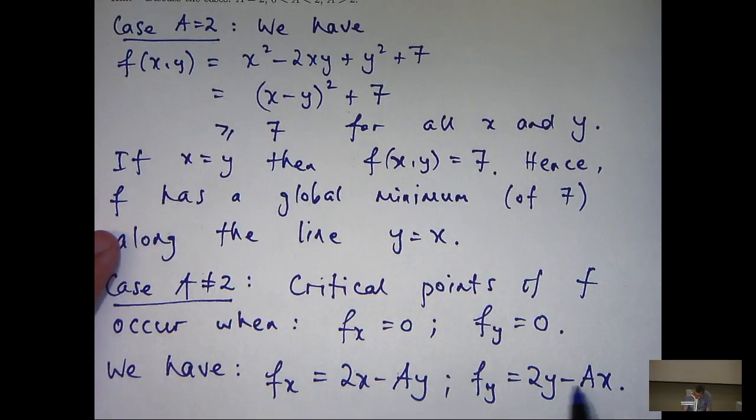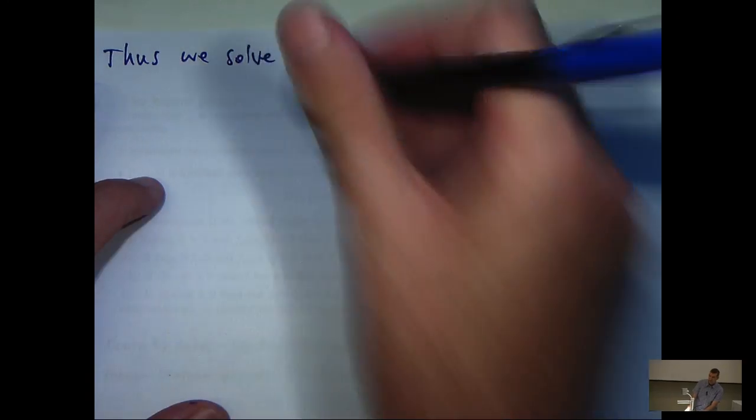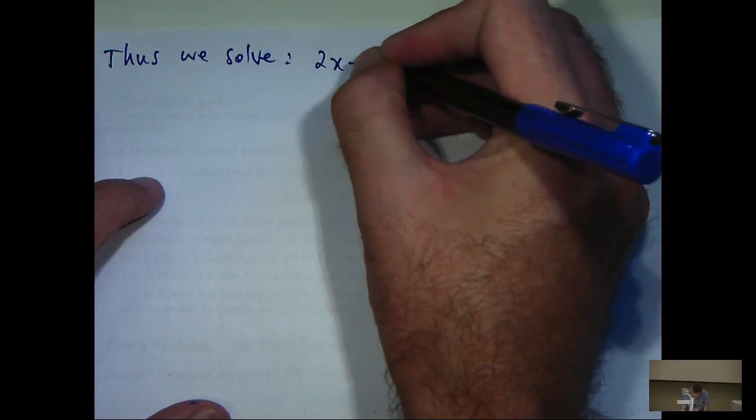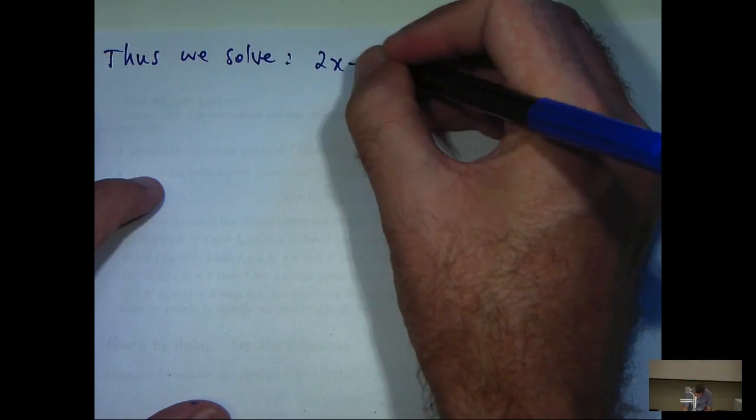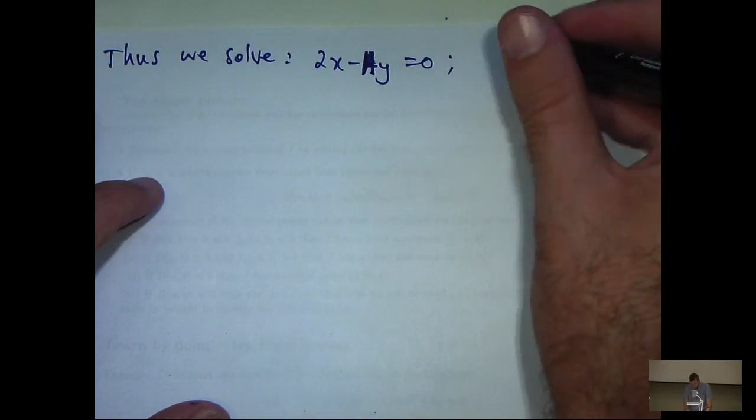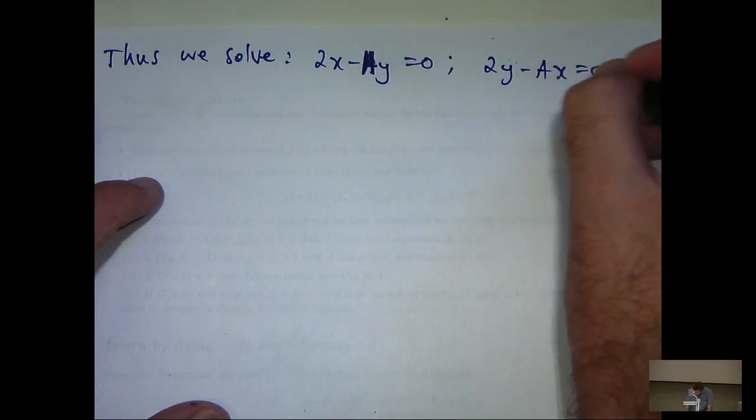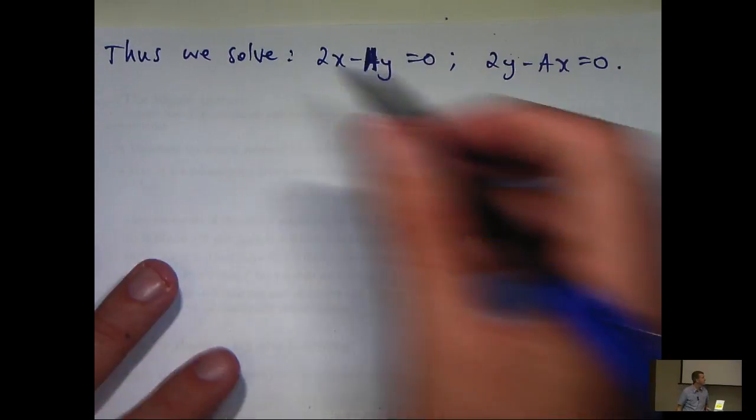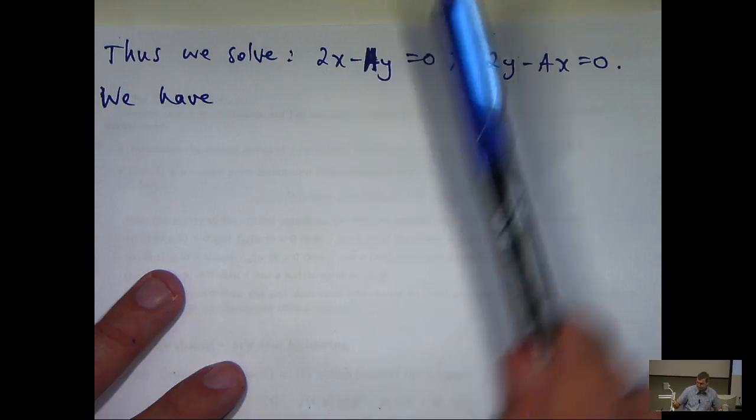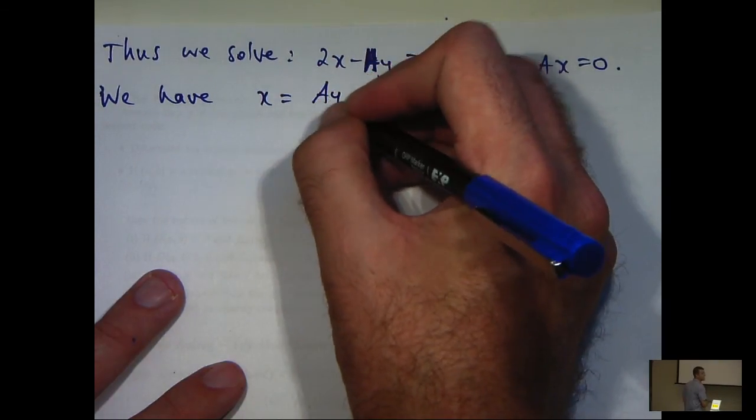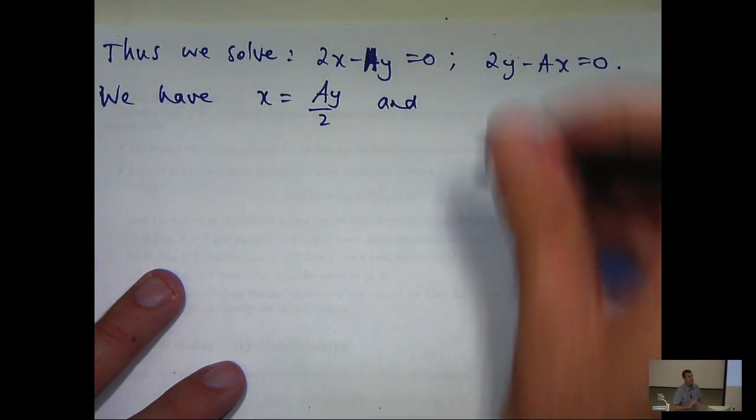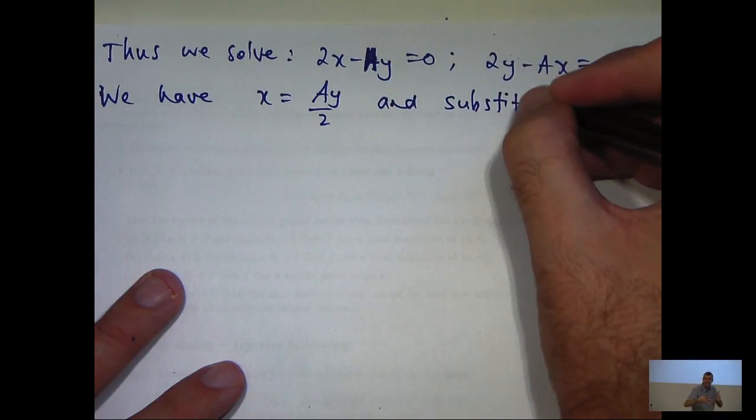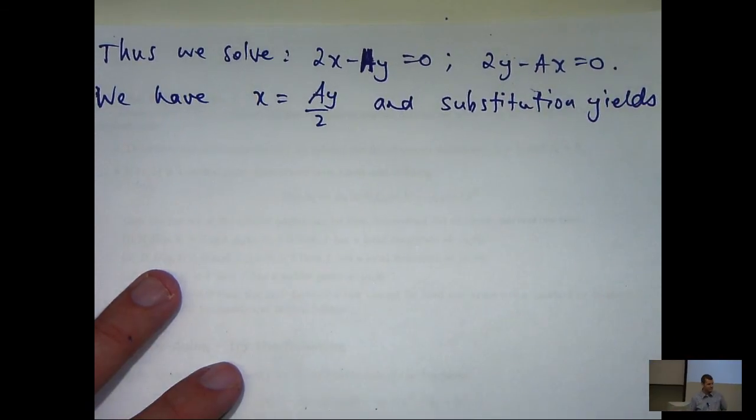So, I'm going to get something like this. Okay, so we set both of these equal to 0 and solve. Two simultaneous equations. We can solve these by substitution.